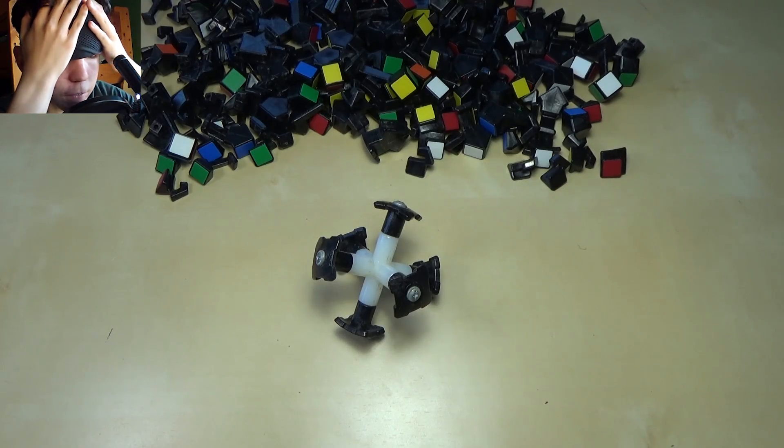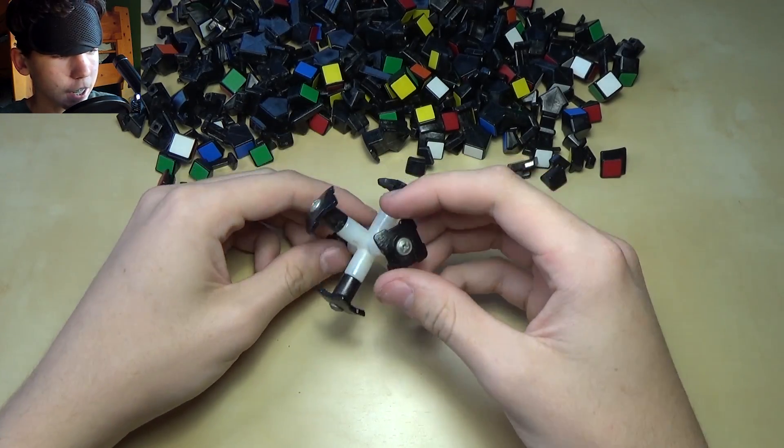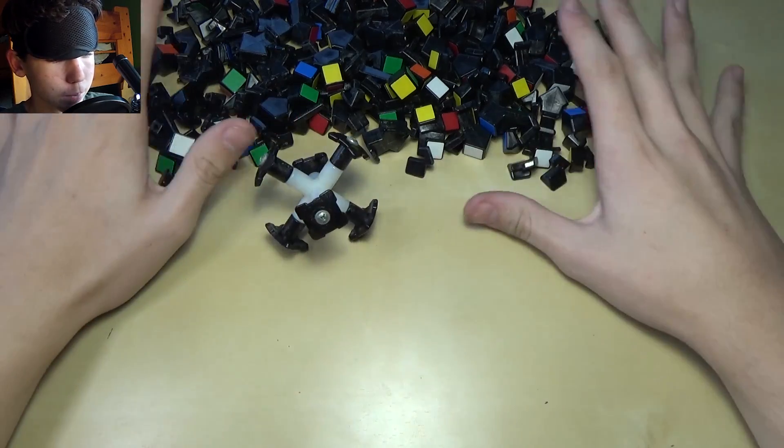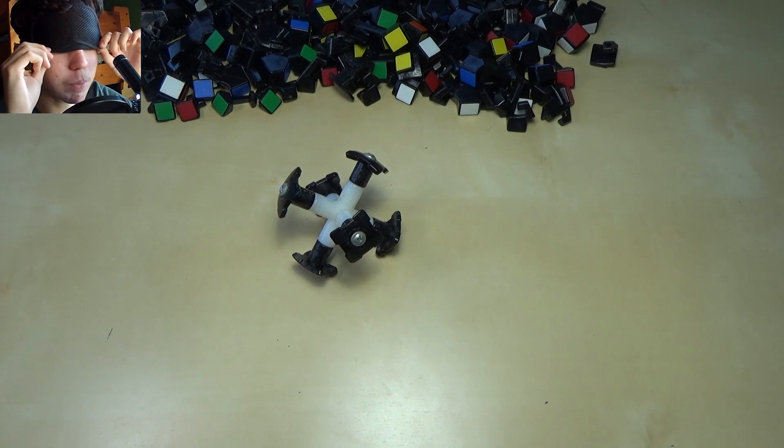And so I am pretty familiar with the V-Cube mechanism so this shouldn't be too hard. So just getting my blindfold ready here. What we can do is put the core here. Make sure all the pieces are just perfect like this. And then put on our blindfold.